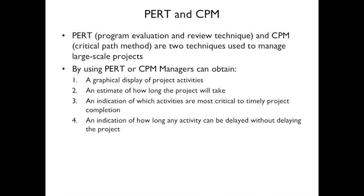PERT — Program Evaluation and Review Technique — and CPM — Critical Path Method — are two techniques for managing large-scale projects. With PERT and CPM you get a graphical display of project activities, an estimate of how long the project will take, an indication of which activities are most critical, and an indication of how long any activity can be delayed without delaying the project — that's the slack time.